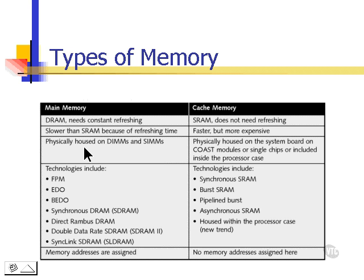Main memory — DRAM — is physically housed on DIMMs and SIMMs, which we'll talk about in just a minute. Cache memory is physically housed on the system board in either a COST module, cache on a stick, or in a single chip that's included inside the processor case.